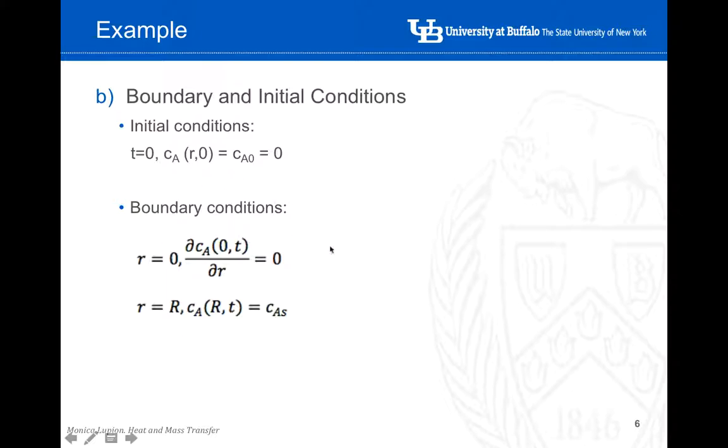As for the boundary conditions, if you remember from lecture 11, we indicated that when there is a certain line of symmetry, we can assume that the variation of the concentration with the coordinate R at the center line of symmetry is equal to zero.